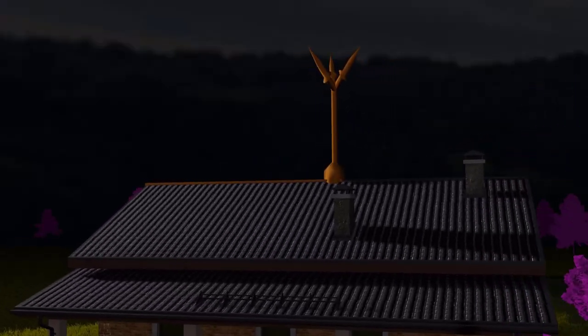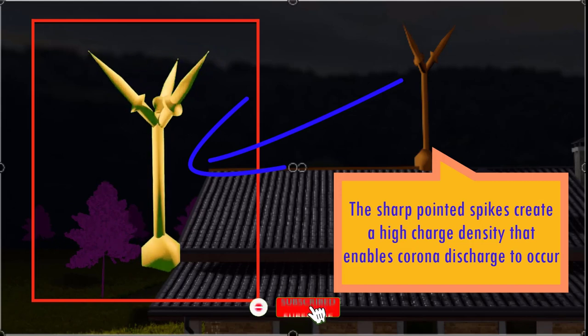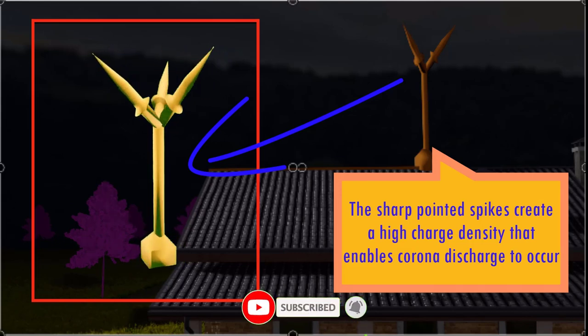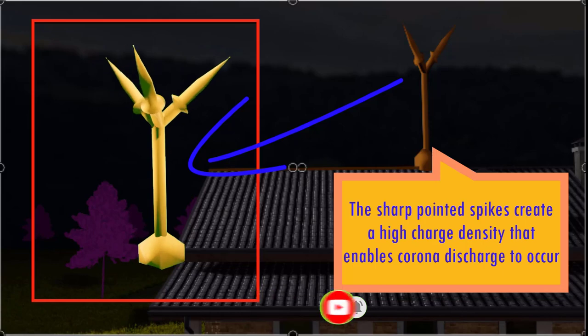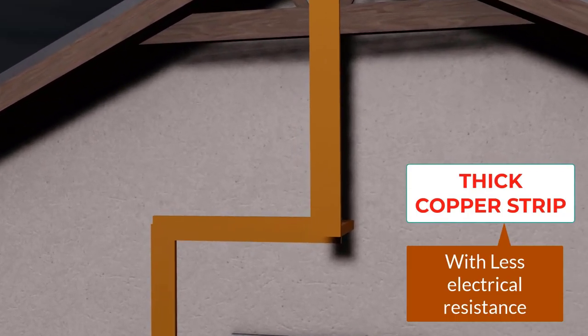The lightning conductor consists of the topmost part, or the rod, with sharp pointed ends. These sharp points are very important for corona discharge to take place. The copper strip is connected to the rod and runs down to the ground where it attaches to a copper plate buried in the earth.